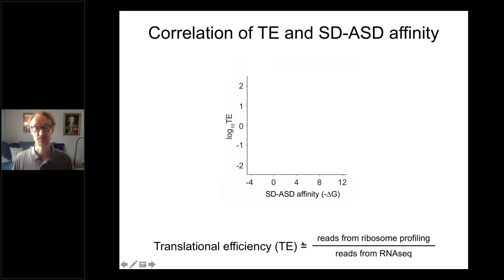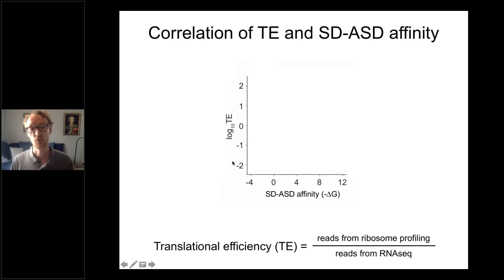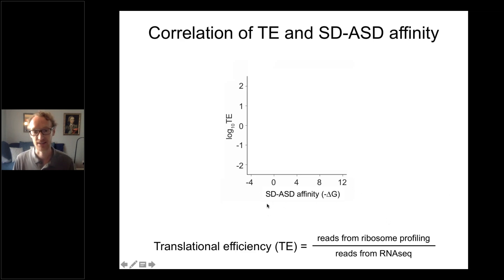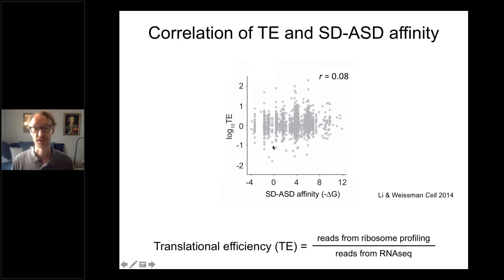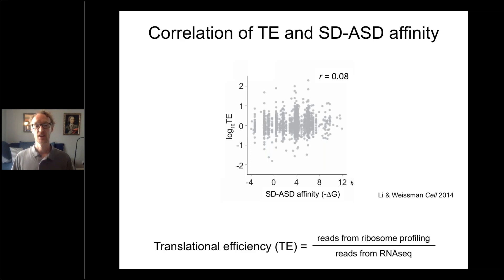Translational efficiency indirectly reports on initiation rates because initiation is thought to be rate limiting — how many ribosomes you have mostly depends on how fast you're loading them. Plotting translational efficiency against the strength of the Shine-Dalgarno sequence, computed by pairing RNA and ribosomal RNA, you'd expect strong Shine-Dalgarno sequences to lead to high translational efficiency. But it turns out there's very little or no correlation, and this is true across many different samples and labs over many years. This suggests the Shine-Dalgarno sequence isn't that important in translational initiation — which is quite scandalous.